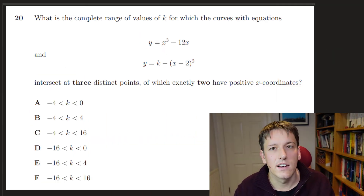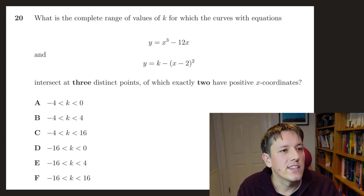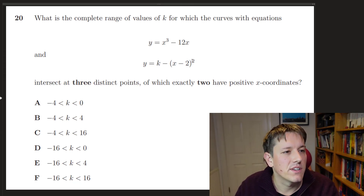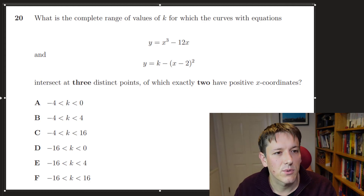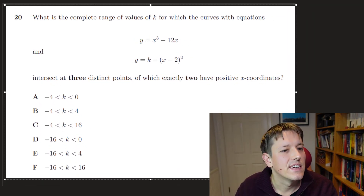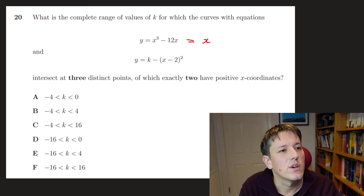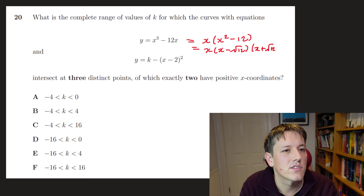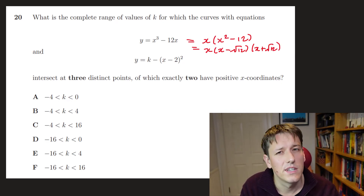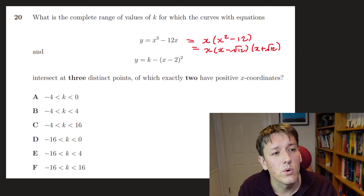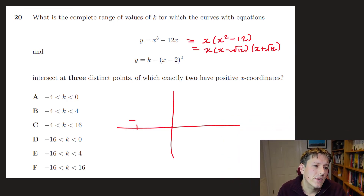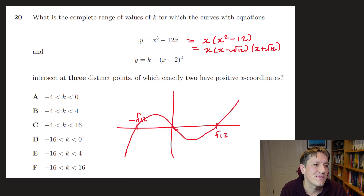Question 20: find the range of k for which y = x³ − 12x and y = k − (x−2)² intersect at exactly three distinct points, exactly two of which have positive x-coordinates. Sketching is essential. The cubic is x(x − √12)(x + √12), a positive cubic through −√12, 0, and √12. The quadratic is in completed square form with maximum at (2, k).